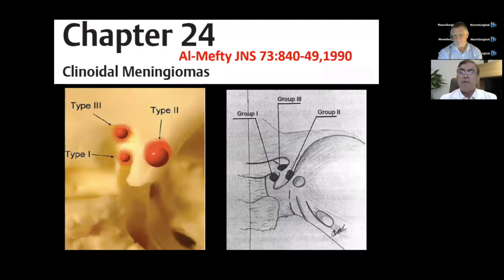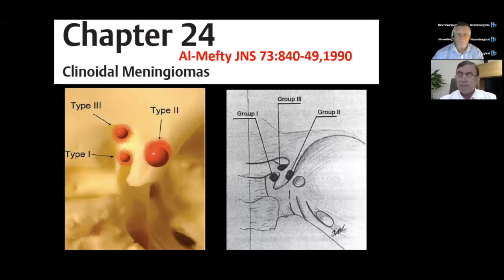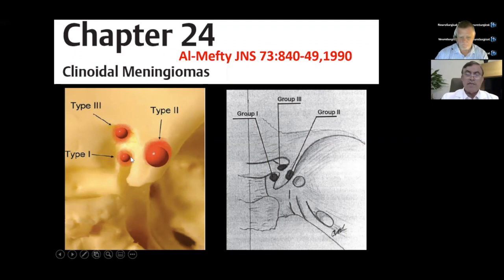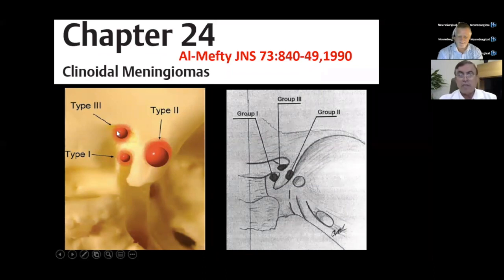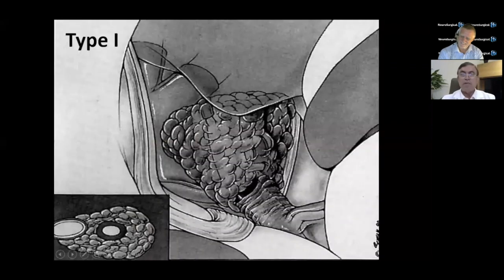Al-Mefty, from Little Rock and now Harvard, described this paper back in 1990 with three types of clinoidal meningioma depending on where exactly they arise. Type one overlies where the carotid artery comes out — this is the most difficult because there is definite infiltration and close relationship between the artery and the meningioma. Type two is easier because you are not in touch with the carotid artery. Type three is also easier — it is exactly over the optic canal.